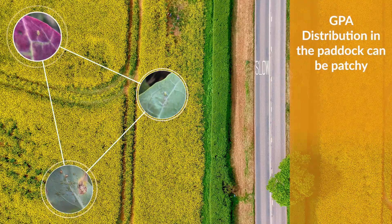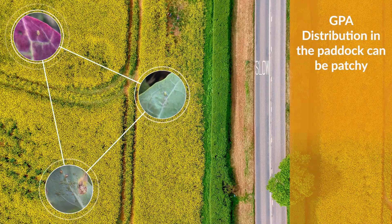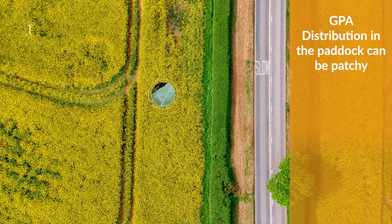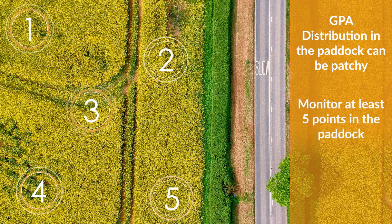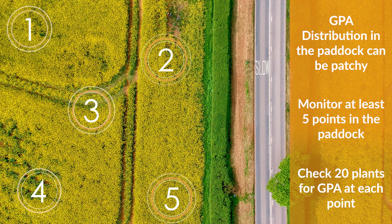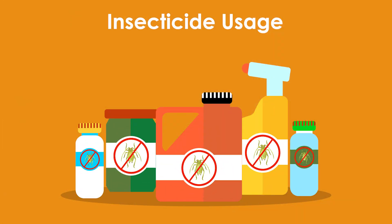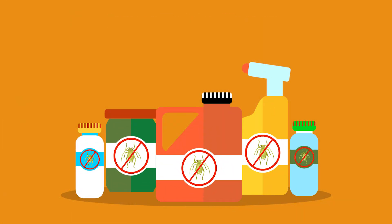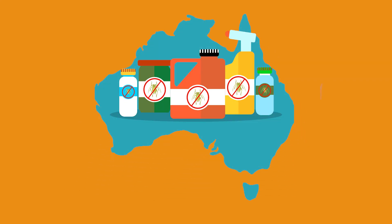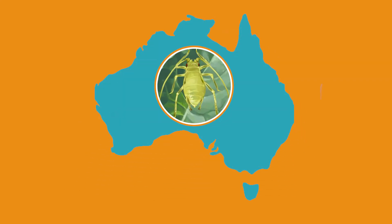Green peach aphid distribution can be patchy in crops, so monitor at least 5 points in the paddock, checking 20 plants at each point. The green peach aphid has evolved pesticide resistance to several chemical actives approved for use by the APVMA. Correctly identifying this pest is therefore crucial for implementing the best management and control strategies.